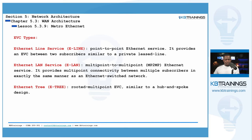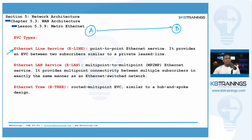There are three main types of EVCs. The first is called Ethernet Line Service, or E-Line. As the name says, this is a single connection between two UNIs. We might have subscriber A on one end and subscriber B on the other — but A and B can simply be two different locations for the same customer. It's similar to a private leased line — like you have a cable going directly from A to B.